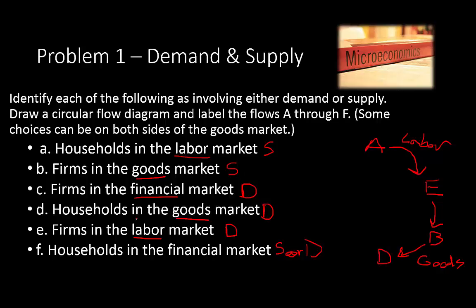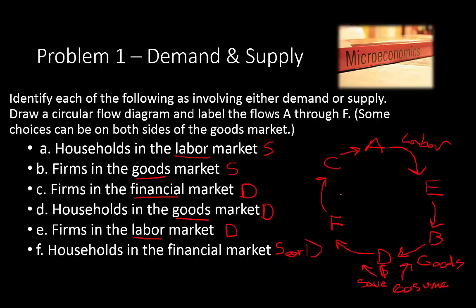Firms then sell their goods to D — households in the goods market. That flow represents consumption. Households can either consume their money from working or save it. If they save, they become suppliers in the financial market, represented by F. Then C — firms in the financial market — take that saved money and reinvest it to buy more labor. That completes the circular flow diagram, with finances, labor, and goods all connected.